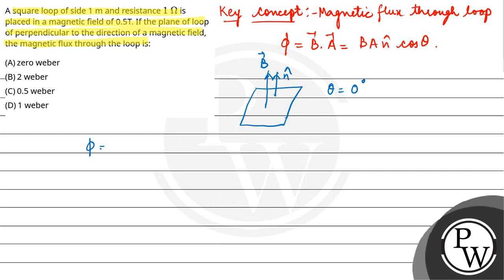So simply find out the flux: B into A, magnetic field is 0.5 into area which is side into side which is 1 squared.